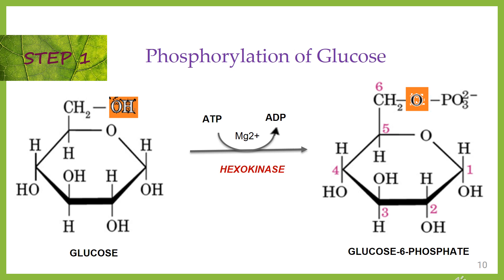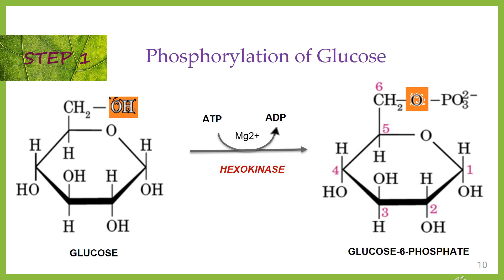Step 1: phosphorylation of glucose. This is the first step of the preparatory phase, by the action of the enzyme hexokinase. Glucose is converted into glucose-6-phosphate. In this step, a phosphate group is transferred from ATP to glucose, forming glucose-6-phosphate. Hexokinase requires Mg²⁺ to catalyze the reaction.